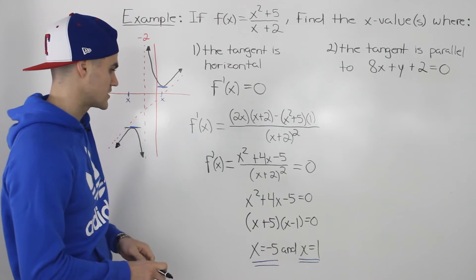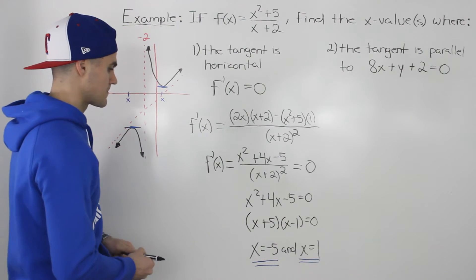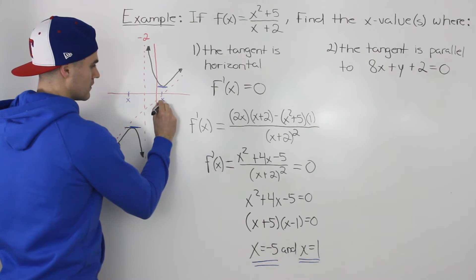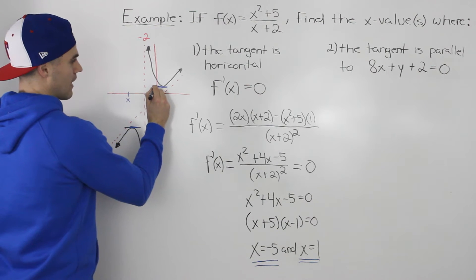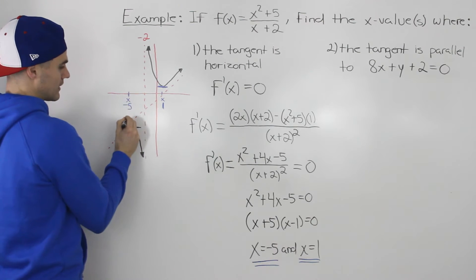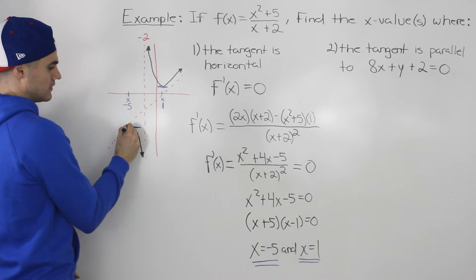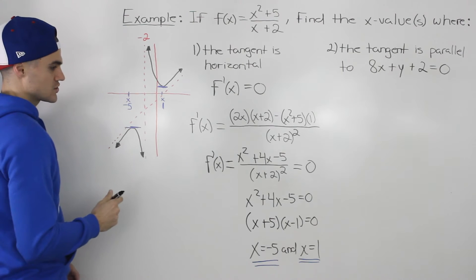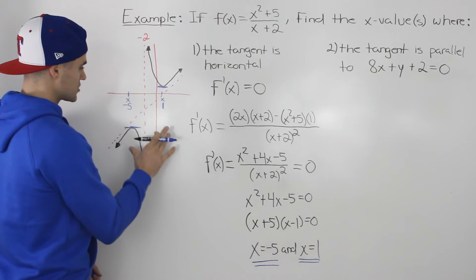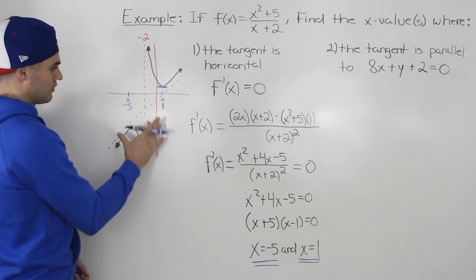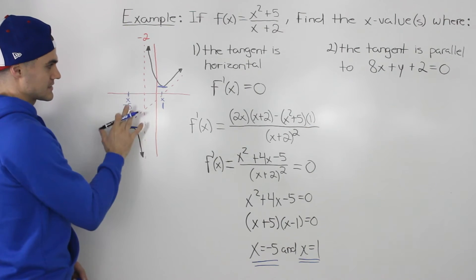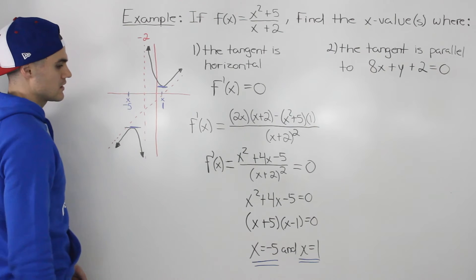Fortunately, in this question they weren't decimal answers. So at an x value of 1 we have this horizontal tangent, and at an x value of negative 5 we have this horizontal tangent. These x values that we got algebraically correspond well with the graph — x equals negative 5 and x equals 1 makes sense on the graph.